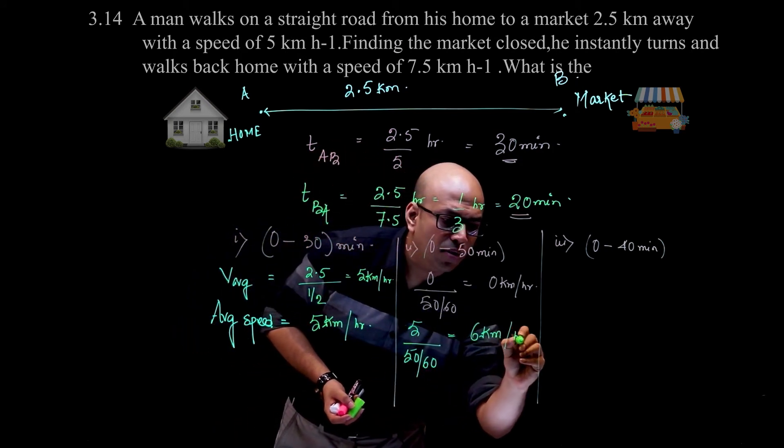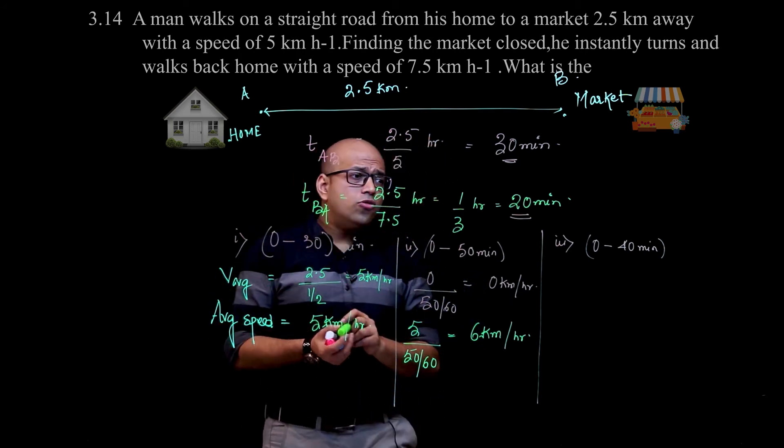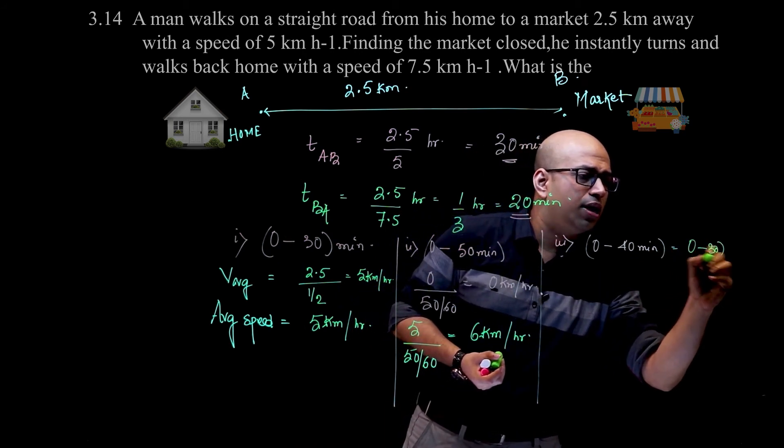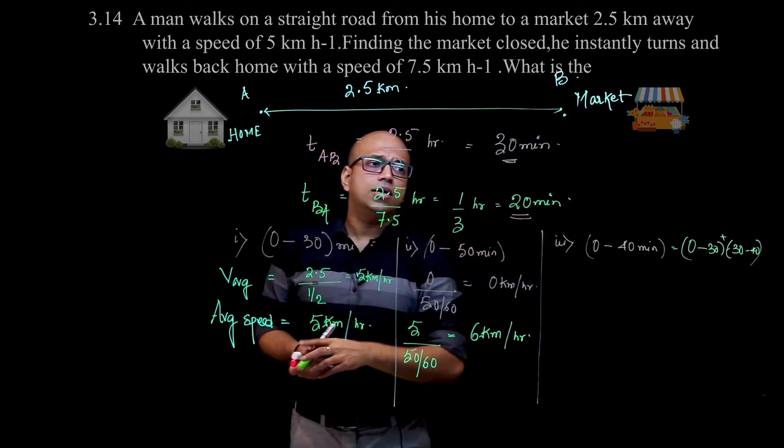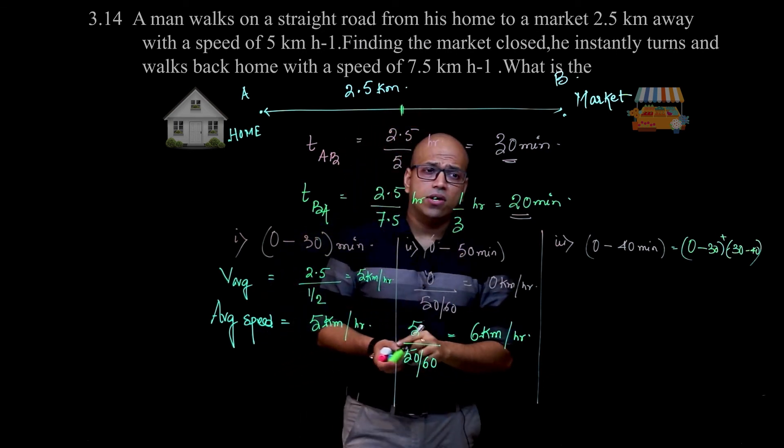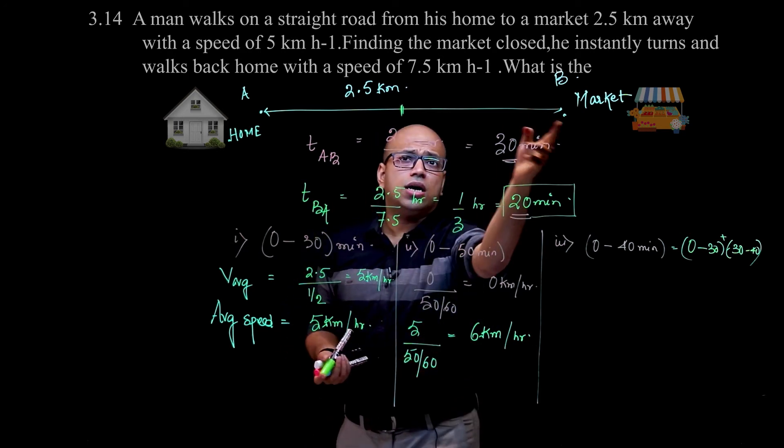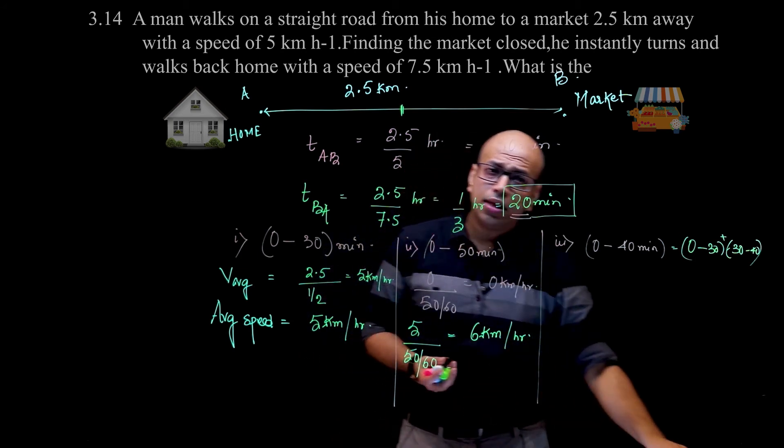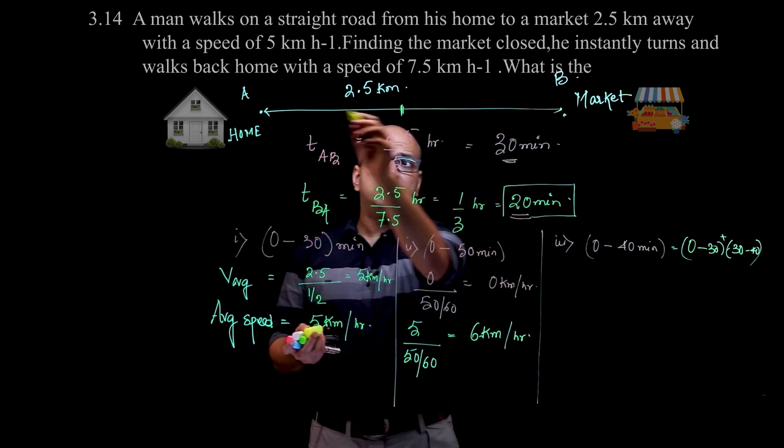Now for 0 to 40 minutes: 0 to 30 minutes forward, plus 30 to 40 minutes return. So 30 to 40 minutes is 10 minutes. Since you need 20 minutes to return completely, 10 minutes is half the return journey. So you've gone half the distance back, which is 1.25 km.